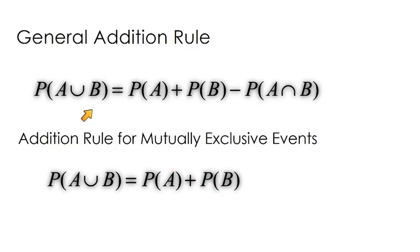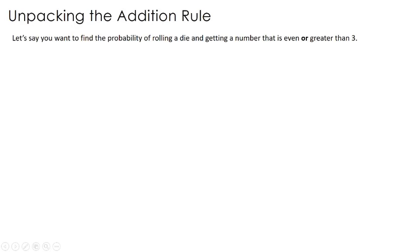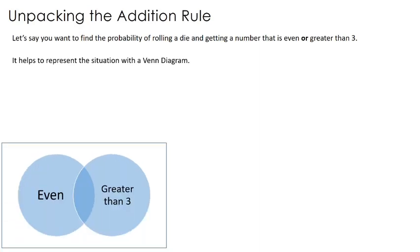The bulk of questions in this video use the full formula — write it down, know it, learn it. Now let's say you want to find the probability of rolling a die and getting a number that is even or greater than 3. This example helps us understand why that equation is the way it is, and a Venn diagram helps us see it clearly. We have event A: the die roll is even, and event B: the roll is greater than 3.